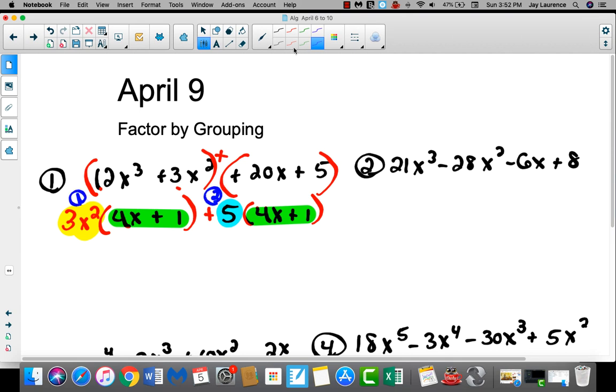Now my third GCF is going to be the 4x plus 1. I'm going to factor it out of both quantities, leaving a 3x squared here and leaving a positive 5 here. And there you go. We just factored by grouping.